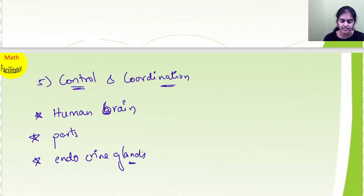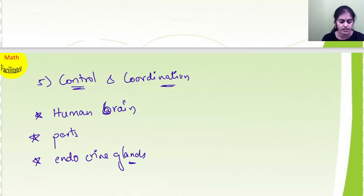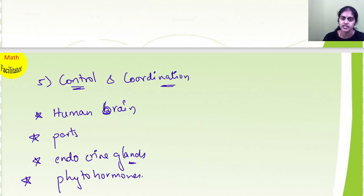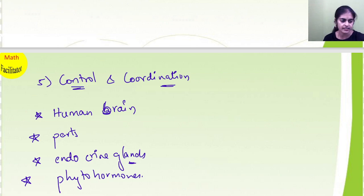Also learn endocrine glands in various parts: pituitary gland, thyroid gland, testes — the different types of glands — their location, the hormone secreted, and what the response to the body is. These glands are important: pituitary gland, thyroid gland, ovaries, testes, and adrenal gland. Learn them and also learn the uses of phytohormones — auxins and their uses, cytokinins, gibberellins. Learn all the phytohormones and all the endocrine glands, and the brain and its functions.